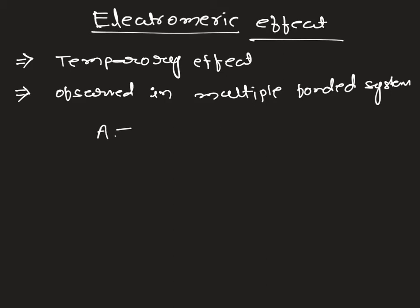Let's take A and B, which have one pi bond, since we observe electromeric effect in multiple bonded systems. If I bring a polar reagent P, whatever the pi bond is there can be migrated to any one of the atoms attached to the double bond. As a result, we get B with a negative charge and A with a positive charge. The pi electrons are migrated to one of the atoms, and this effect is called electromeric effect — a temporary effect in presence of polar reagents.